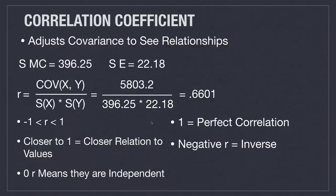We're going to get into something called regression. The correlation coefficient adjusts the covariance so that it is easier to see the relationship between x and y. Its value can't be greater than 1 or less than negative 1. The closer you get to 1, the closer the relationship between the values. In this example, plugging in the standard deviations of market cap and earnings, we get a value of 0.6601, meaning they are correlated. Perfect correlation would have a value of 1. Zero shows independence, and negative values show an inverse correlation.